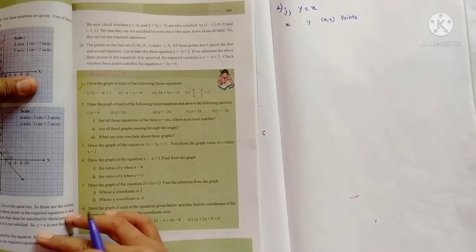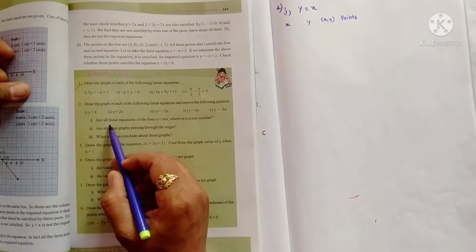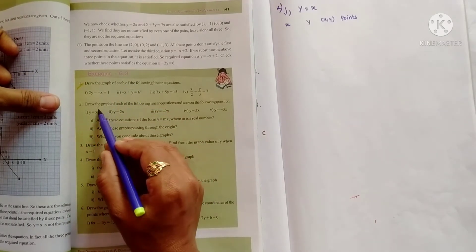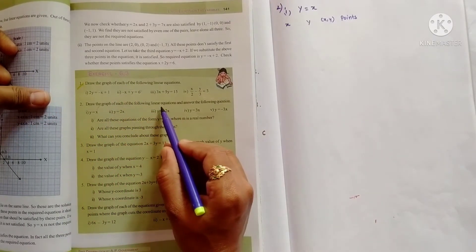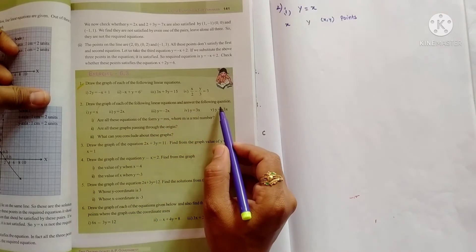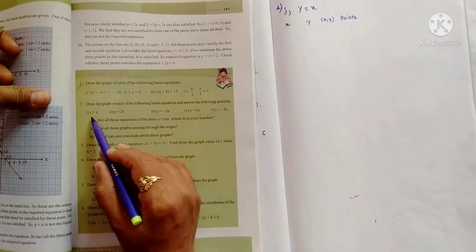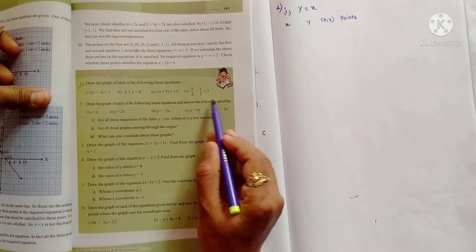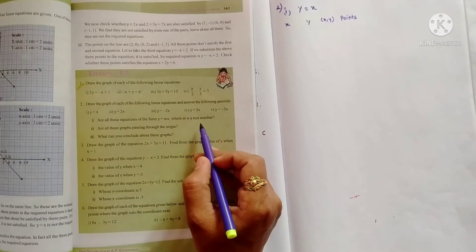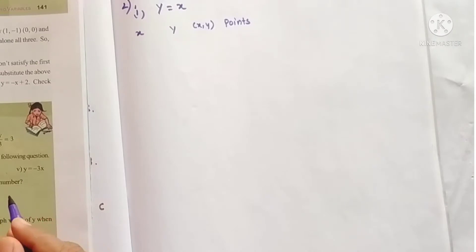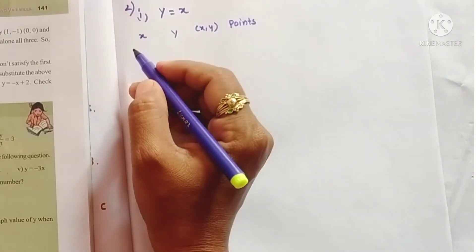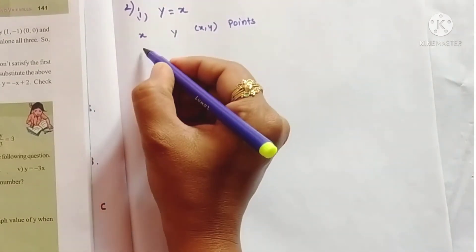Hello students, welcome to my channel. Today in this video we will see problem 6.3: draw the graph of each of the following linear equations and answer the questions. For all these five equations we will draw in a single graph. First we will calculate the values for y equals to x.